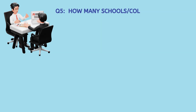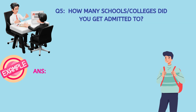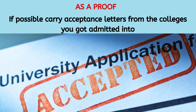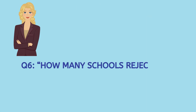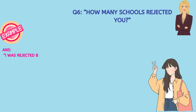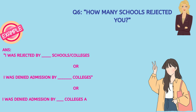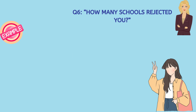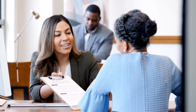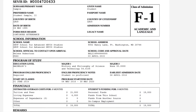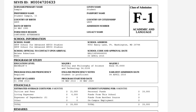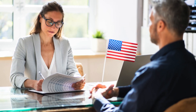Question number five: how many schools or colleges did you get admitted to? Here also, it's a factual question — I got admitted to these many schools. Try to carry acceptance letters from the colleges you got admitted into in case the visa officer wants to have a look. They could also ask how many schools rejected you — here you must mention clearly that I was rejected by or denied admission by these many schools. If you applied to five colleges and got rejected from four, don't worry — this will not jeopardize your chances of getting a visa. As long as you have an I-20 from a U.S. university, that is all that is needed to get an F-1 visa. Please try to be as honest and close to truth as possible.